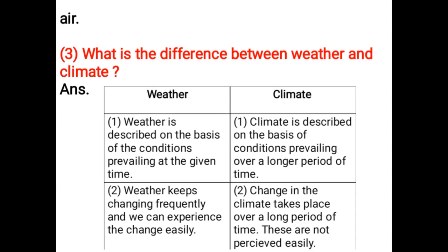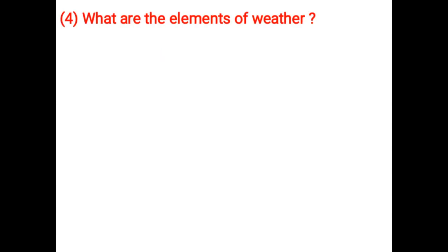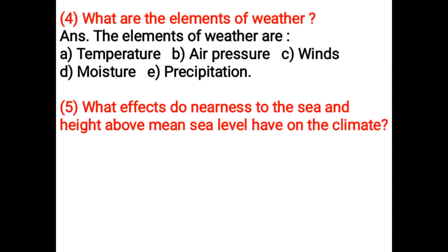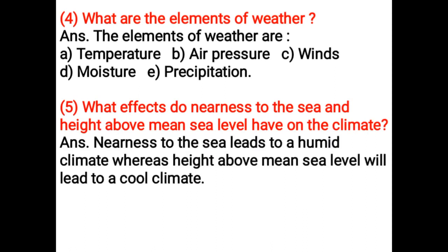These changes in climate are not perceived easily. What are the elements of weather? The elements of weather are temperature, air pressure, winds, moisture, and precipitation. What effects do nearness to the sea and height above mean sea level have on the climate? Nearness to the sea leads to a humid climate, whereas height above mean sea level leads to a cool climate.